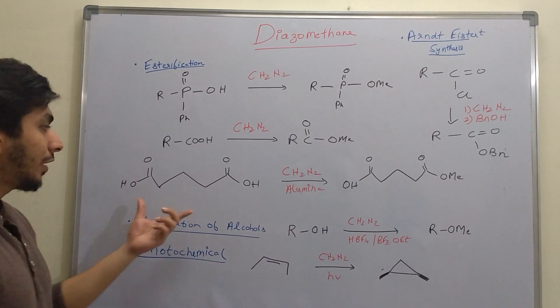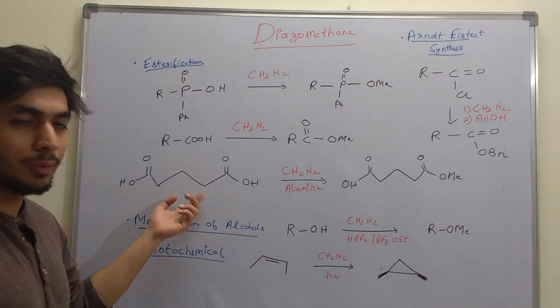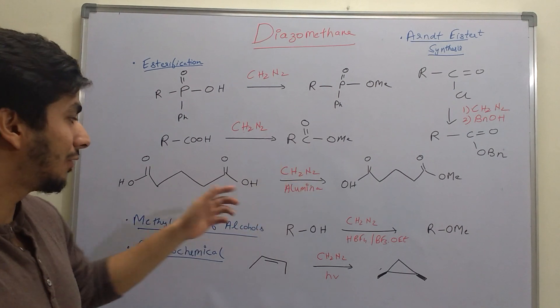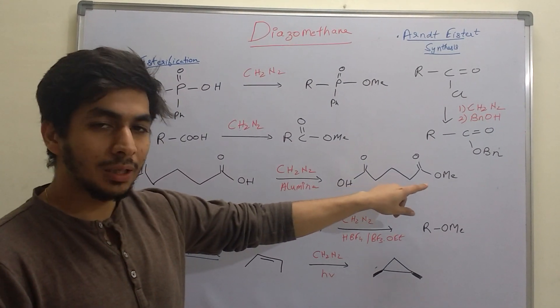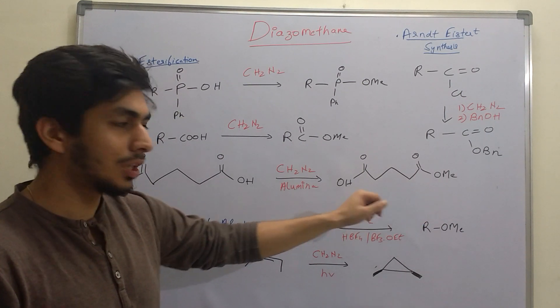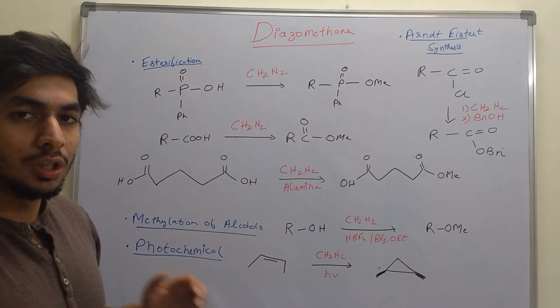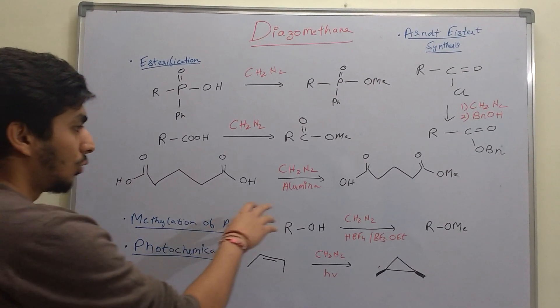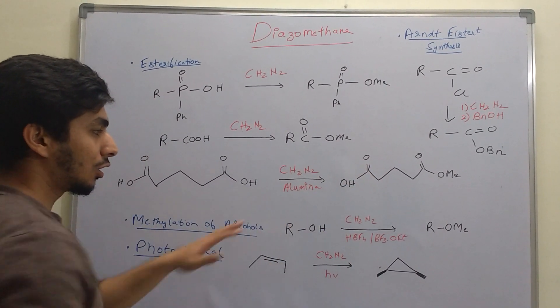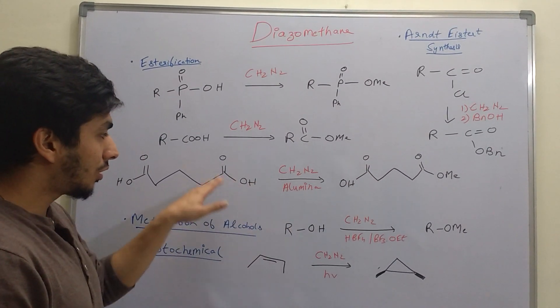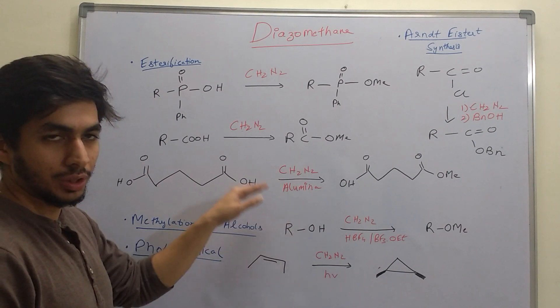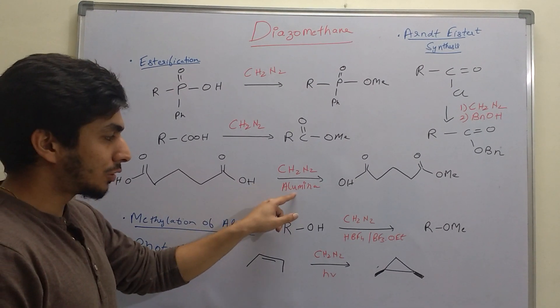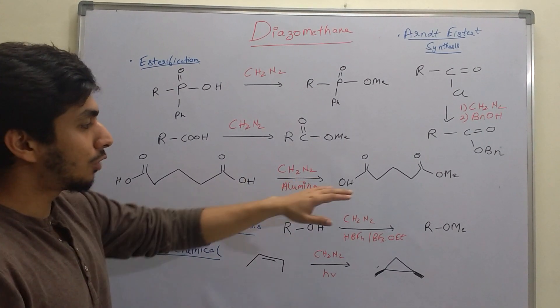If we have a dicarboxylic acid, this is one important reaction. In presence of diazomethane and alumina, it can selectively lead to methylation of one of the carboxylic acids while the other remains as it is. It's a very chemoselective reaction. One of the carboxylic acid groups binds to the alumina, so the other one is left free to be methylated.